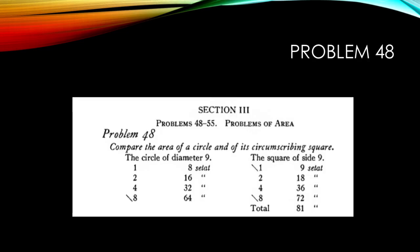So the text says: compare the area of a circle and of its circumscribing square. The circle of diameter 9.